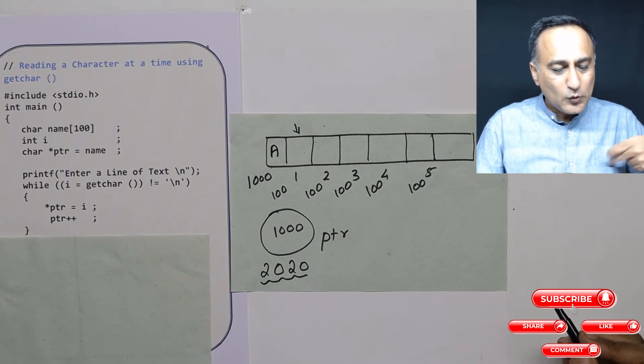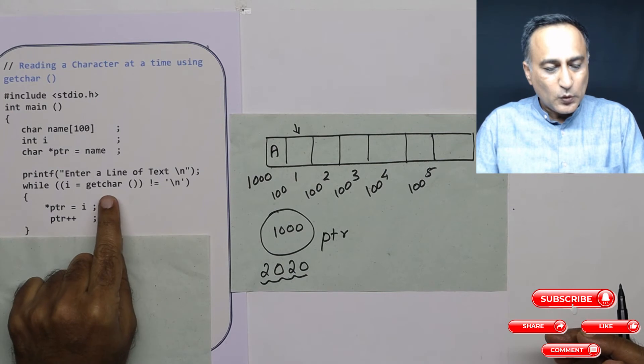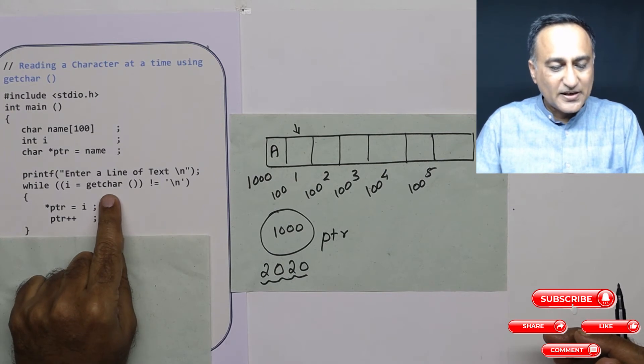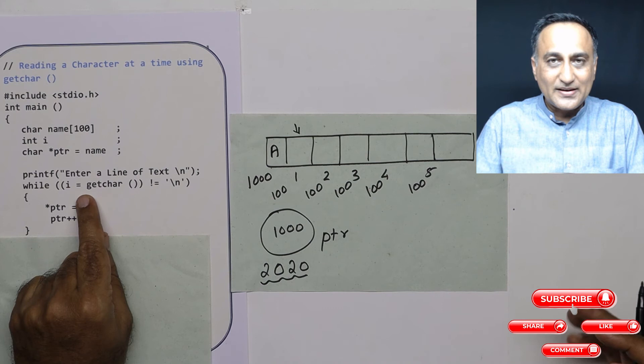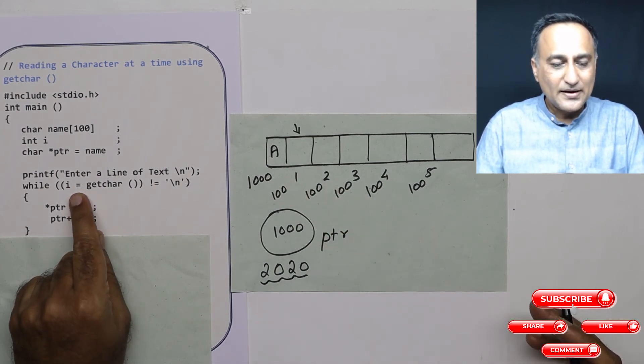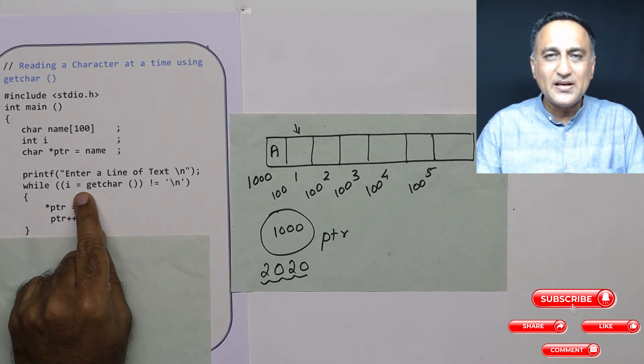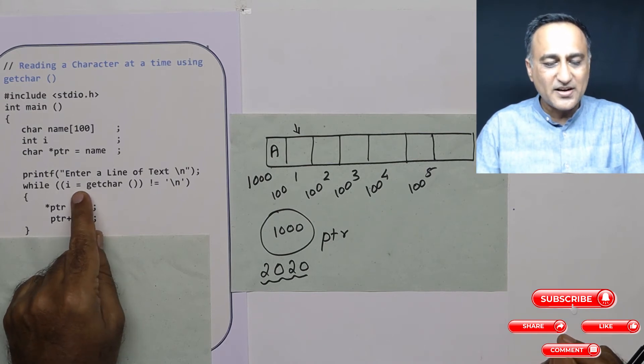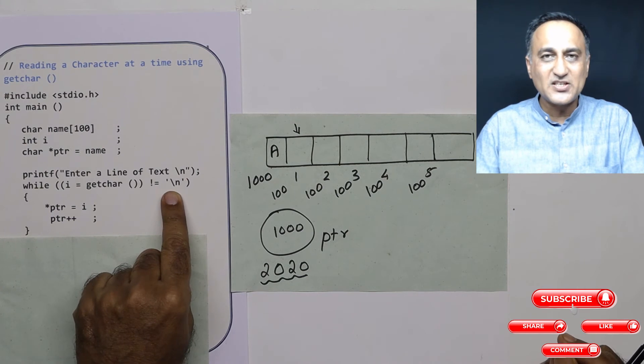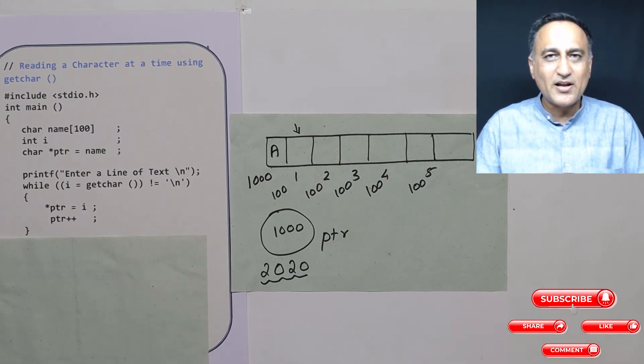Before I get into that, I need to explain a very important concept. When getchar returns an integer type, this assignment operator takes that capital A ASCII value and assigns it to I. Assignment being an operator in C, the operator's evaluation results in some value being generated. So assignment generates a value 65 which is compared with backslash n. Since 65 and backslash n have different ASCII values, they are not equal.